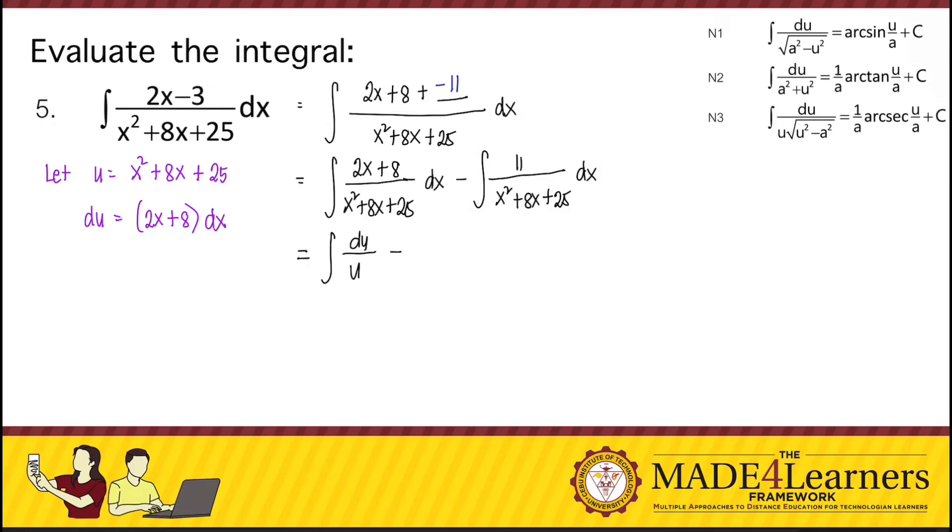we rewrite x squared plus 8x plus 25 as we perform completing the square. So x squared plus 8x plus, to perform completing the square, we divide the middle term by 2 and then raise it to the power of 2. So this is 8 divided by 2, we get 4, and raise it to the power of 2, we get 16.